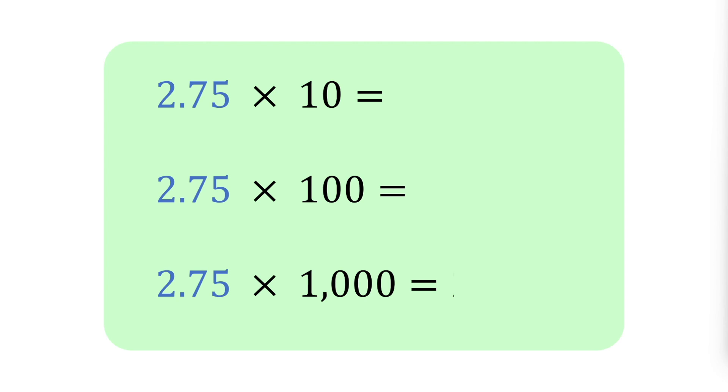When you multiply by 10, 100, or 1000, you move the decimal point by the same number as there are zeros in the power of 10.